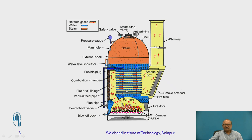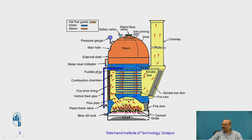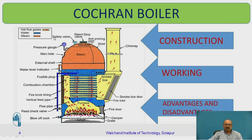This particular Cochran boiler is more popular in our area as far as Solapur district is concerned. In a couple of industries we have this Cochran boiler because it can be installed easily and it utilizes a lower quality of fuel. The requirement of the textile industry is fulfilled by this Cochran boiler because it does not require high pressure.